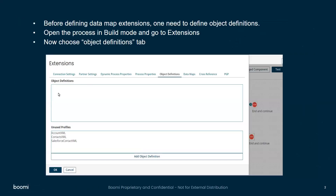So before defining the data maps, we need to define object definitions for the profiles that are used in these maps. To do so, open the process in the build mode and go to Extensions. Now go to the Object Definition tab. Here you can see the profiles for which object definition is not defined. So first we need to define object definition for this profile. To do so, click on one of the profiles and choose the Add Object Definition option.